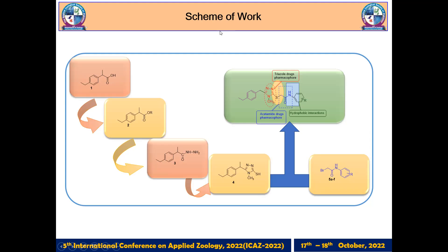Here is the overall scheme of my work. I took an organic acid and it was converted into its respective ester by reaction with ethanol in the presence of sulfuric acid used as the catalyst. Then this ester was converted into its respective hydroxide, and this hydroxide was then cyclized into its respective triazole.